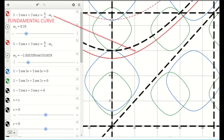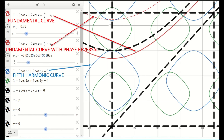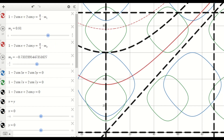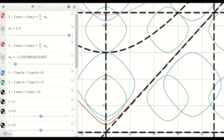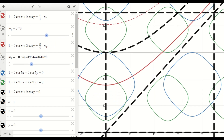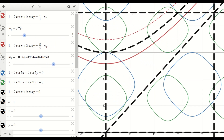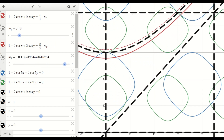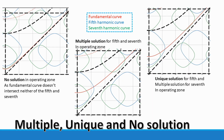After that, plot the Xi equations on a graph using the equations. Different modulation indices make it feasible to have either no solution, a single solution, or numerous solutions, as demonstrated.